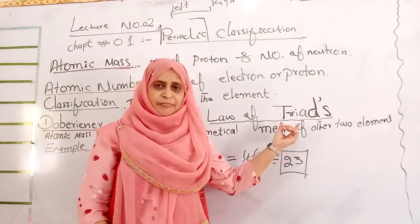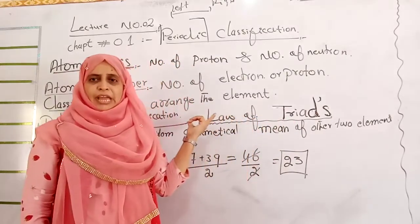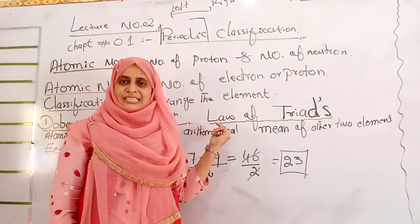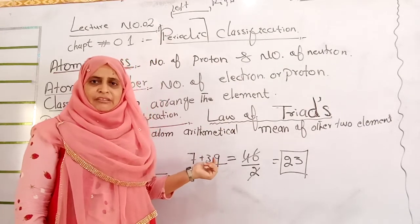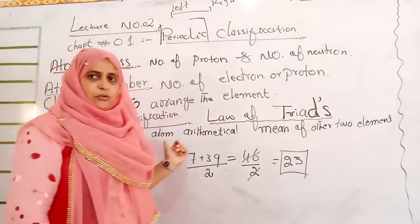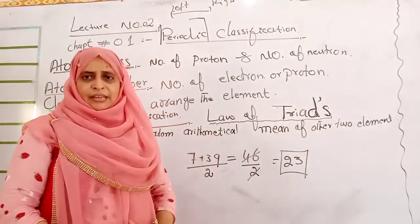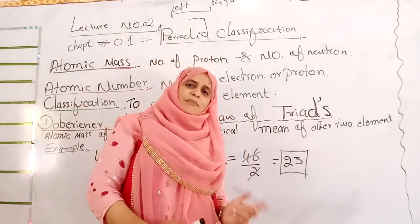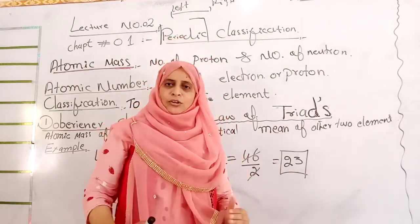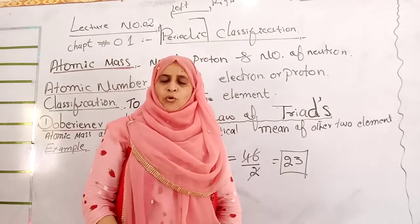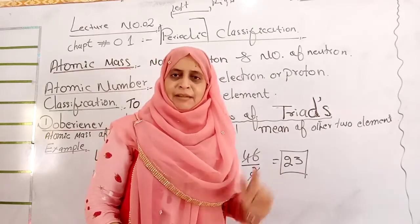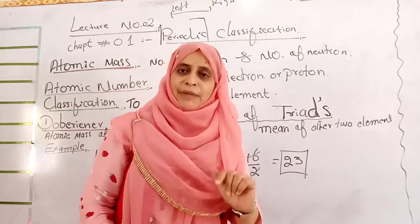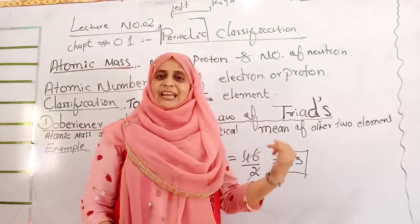Tri means three. The statement of Dobereiner is: the atomic mass of the central element is the mathematical mean of the other two elements. When the atomic mass of the first element and the atomic mass of the third element are added together and divided by two, you obtain the atomic mass of the second element — the central element.